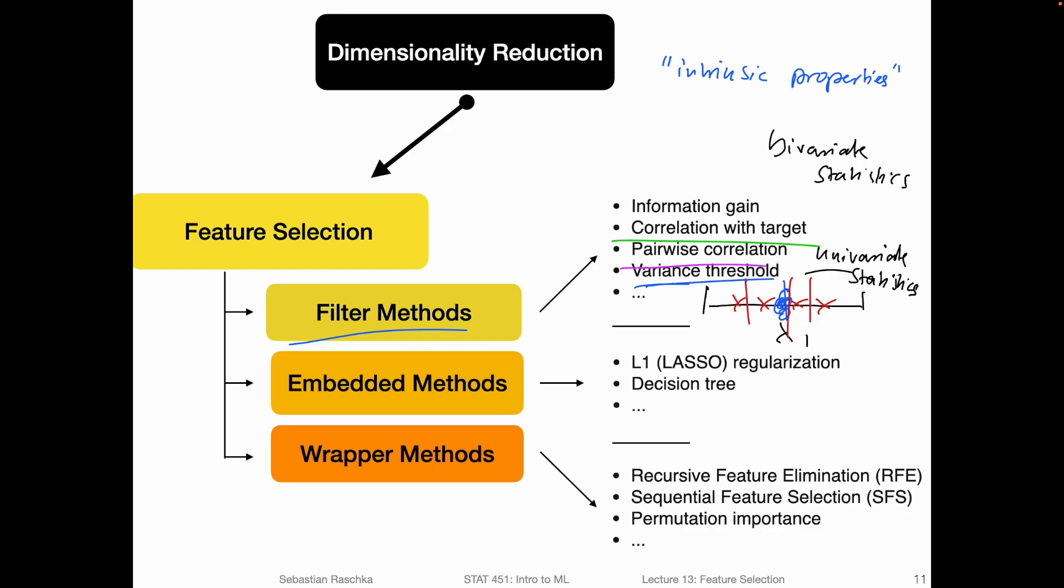Another bivariate statistic would be the correlation of the feature with the target itself. Especially in regression analysis, if we have a feature that is highly correlated with a target variable, fitting a regression model on these two variables would give us a very good bang for the buck if we have a high correlation between feature and target. That's also pretty useful. In a nutshell, filter methods are methods that are really focused on the features themselves. In contrast, we have these embedded methods.